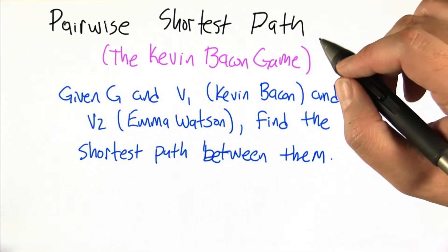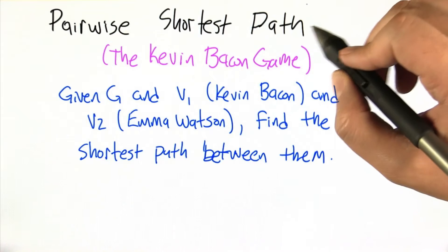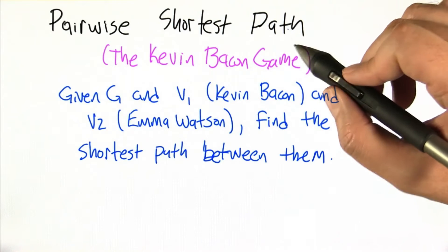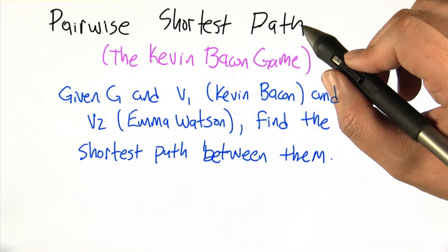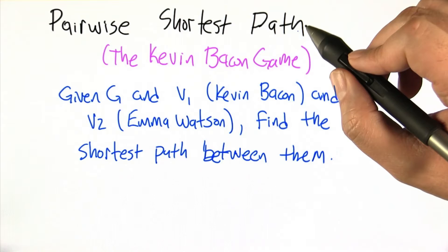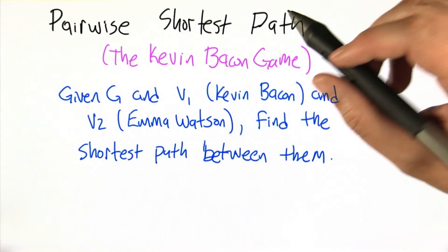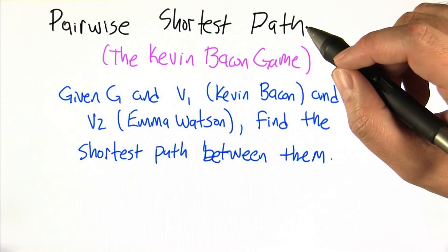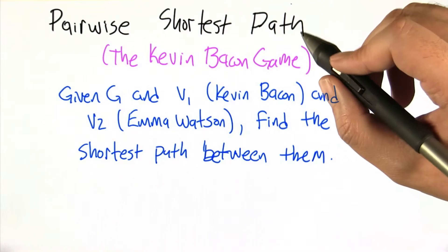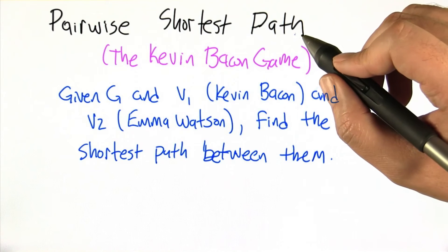One extremely important operation in analyzing social networks is finding the shortest path between individuals in the graph. Not generally because we need the actual path, but because we want to have some sense of how closely connected different pieces of the graph are. The pairwise shortest path problem is of independent interest — it's essentially what allows Google Maps or MapQuest or Yahoo Maps to plot shortest paths for you to drive.